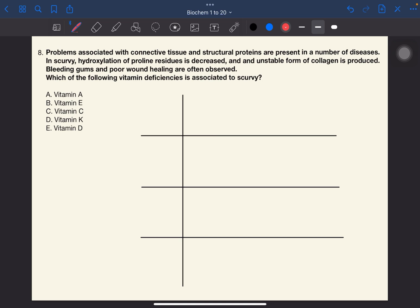Problems associated with connective tissue and structural proteins are present in a number of diseases. In scurvy, hydroxylation of proline residues is decreased and an unstable form of collagen is produced. Bleeding gums and poor wound healing are often observed. Which of the following vitamin deficiencies is associated to scurvy? The answer to this one is C, vitamin C.